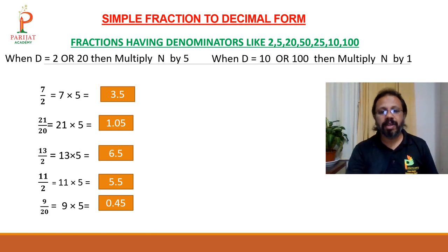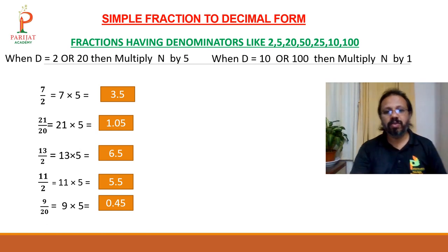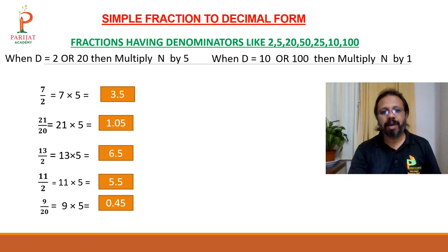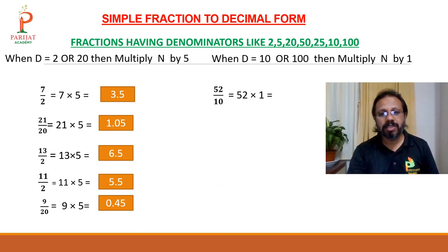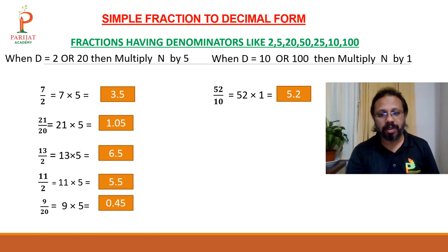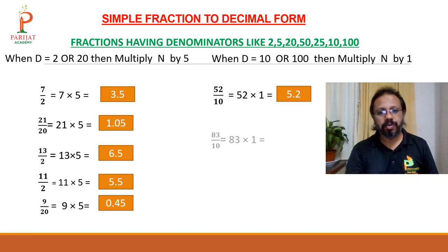Second type: when D is equal to 10 or 100, multiply the numerator by 1. For example, 52 upon 10 — 10 has only a single zero, so multiply by 1 to get 52, then leave the last 1 digit and give the decimal point. Answer is 5.2.